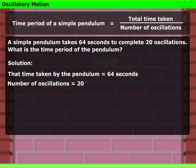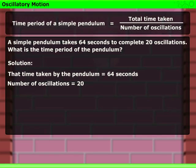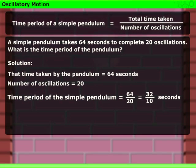We also know that time period of a simple pendulum is equal to total time taken divided by number of oscillations. Substituting the values in this formula, we get 64 divided by 20 which is equal to 32 divided by 10 or 3.2 seconds.